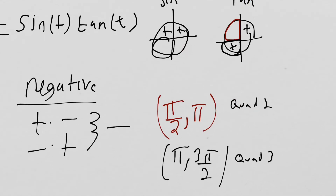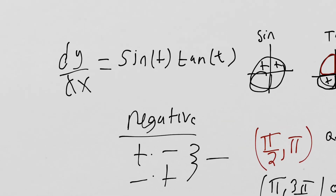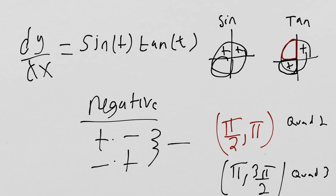In the fourth quadrant they're both negative, so that's going to cancel to positive. And in the first quadrant they're both positive, so that's also going to produce a positive. So it's just in quadrant 2 and quadrant 3 that this is going to have a negative slope.